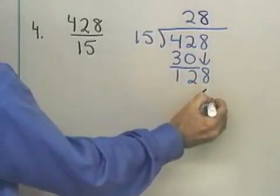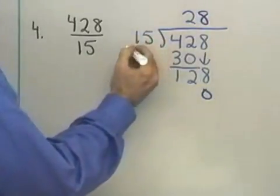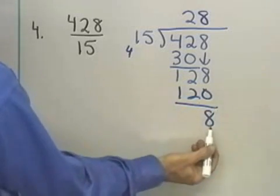8 times 5 is 40, carry the 4, 8, and that is 12. Okay, I think we're all right.